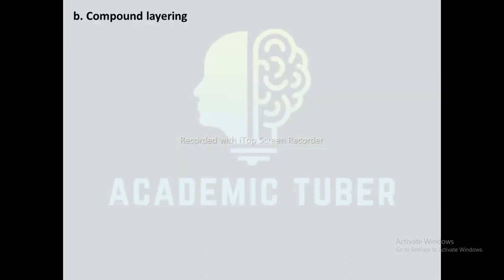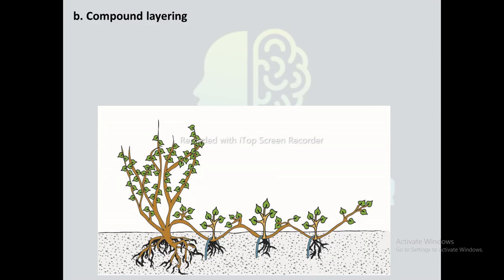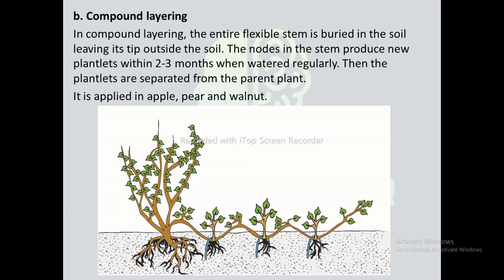Second is compound layering. This method produces many new plants from a single flexible stem. In compound layering, the entire flexible stem is buried in the soil leaving its tip outside the soil. The nodes in the stem produce new plants within 2 to 3 months when watered regularly. Then the new plants are separated from the parent plant. It is applied in apple, pear, and walnut.